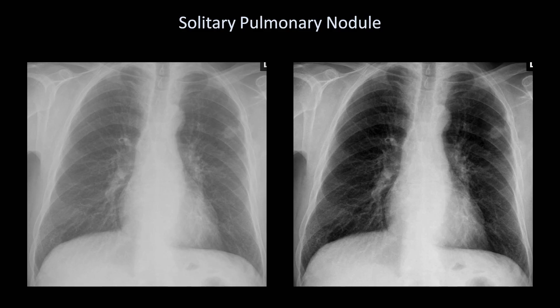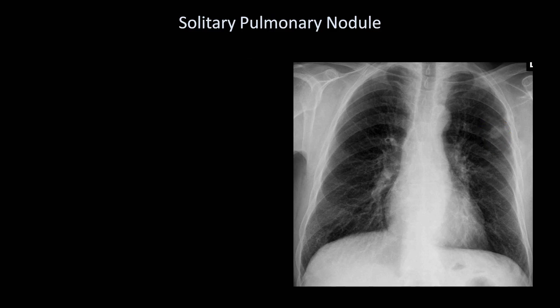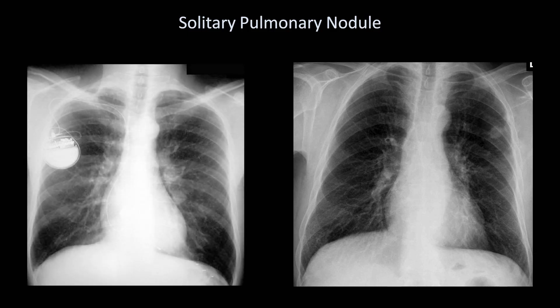An important aspect of identifying a pulmonary nodule is using the correct amount of contrast. Consider these two identical films — the nodule is slightly easier to see when contrast is increased. In another example, a nodule of approximately the same size and round shape is much harder to spot due to its central location near the hilum.